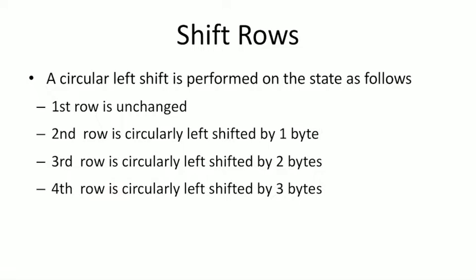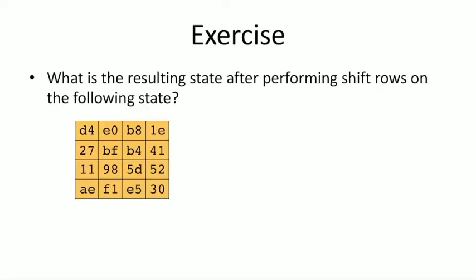After the SubBytes step, we have a permutation step known as ShiftRows. As the name suggests, we perform a circular left shift on the rows of the state matrix. The first row remains unchanged, the second row is circularly left-shifted by one byte, the third row by two bytes, and the fourth row by three bytes.